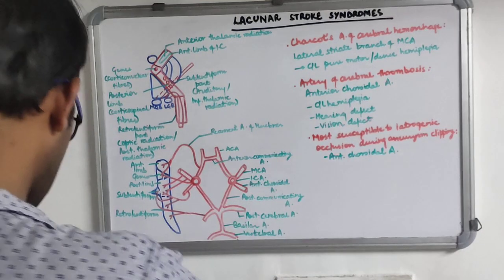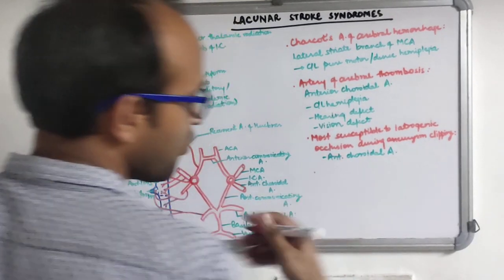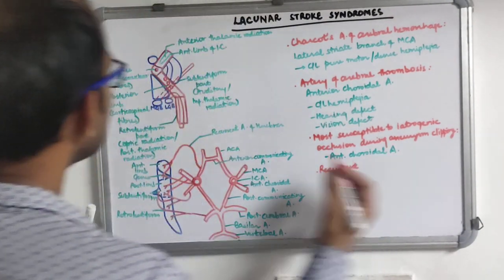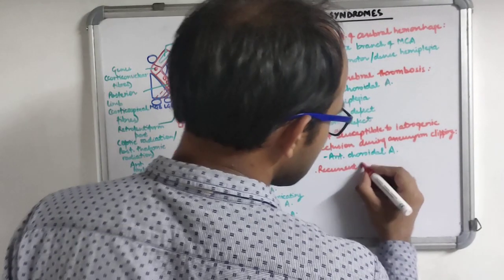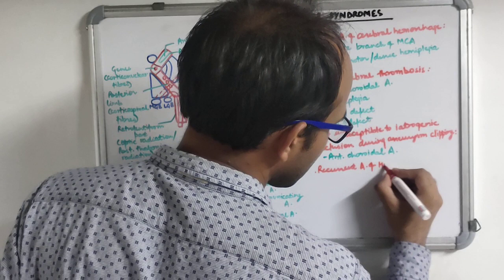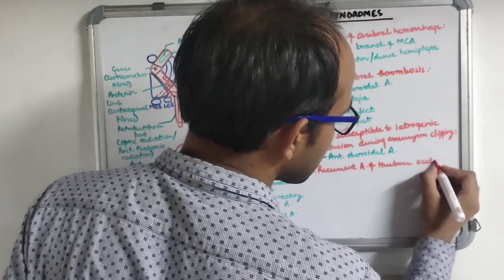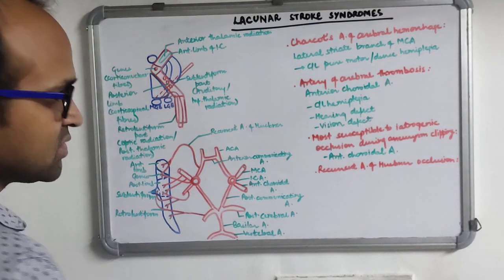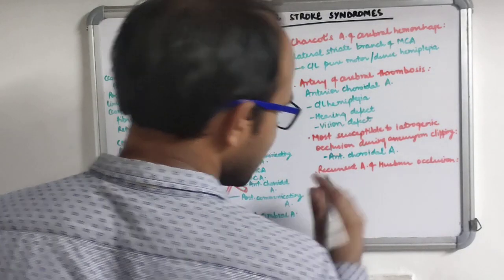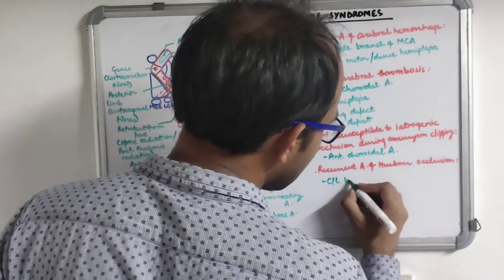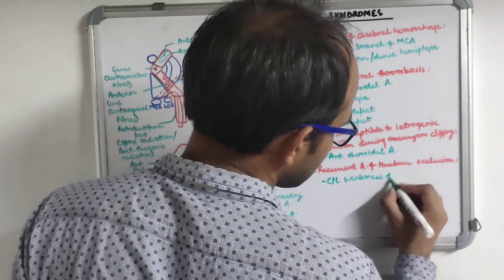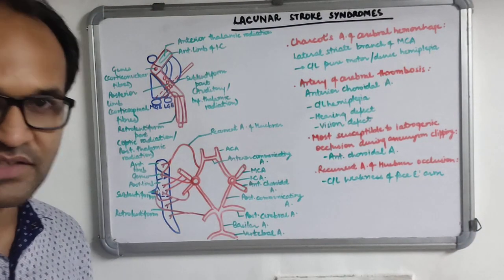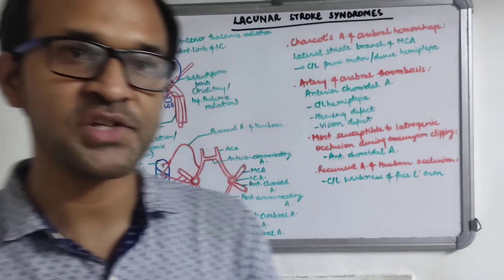Lastly, if there is an occlusion of the recurrent artery of Hübner - a branch of the anterior cerebral artery - there is weakness of the contralateral face and arm alone. There is no involvement of the lower limb and no sensory deficit. This is all I have to discuss in stroke localization.